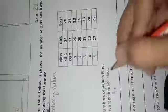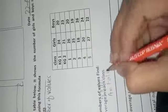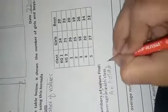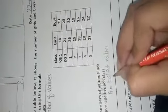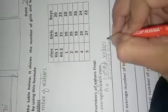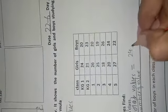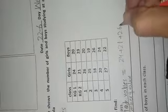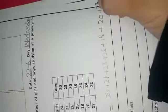Average equals total values divided by number of values. So total values are: 24 plus 21 plus 26 plus 25 plus 18 plus 20 plus 27, divided by number of values: 1, 2, 3, 4, 5, 6, 7.